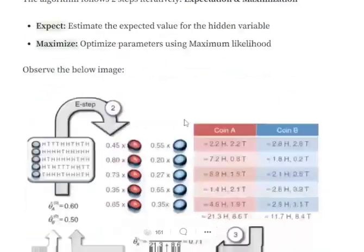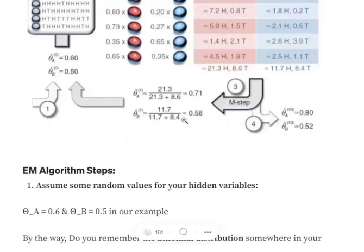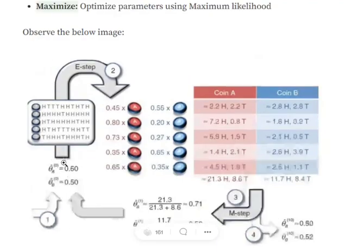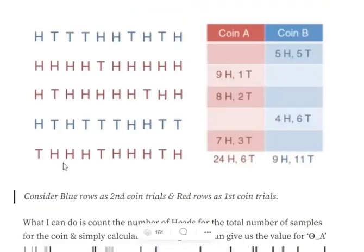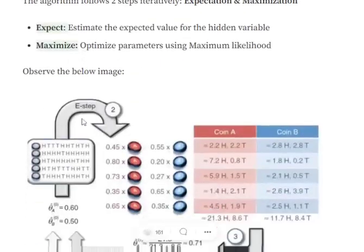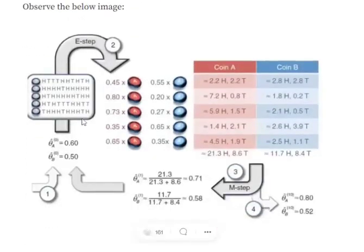Assume we have estimated theta_a = 0.6 and theta_b = 0.5. Remember, the actual answer we're expecting is theta_a = 0.8 and theta_b = 0.45. Let's see whether the algorithm converges to those values. First, we need to understand binomial distribution before we jump into the mathematics.